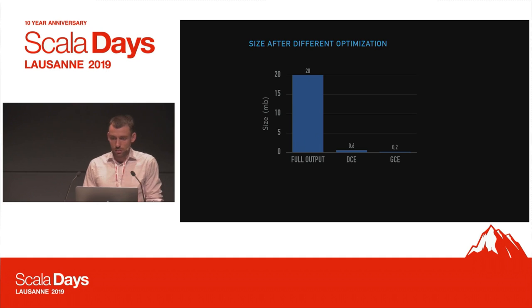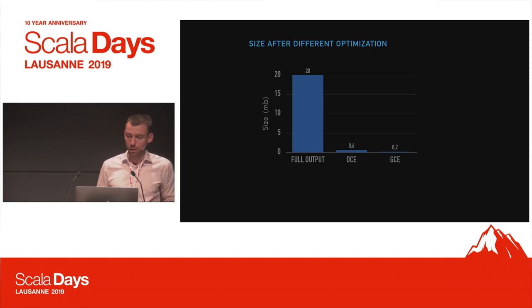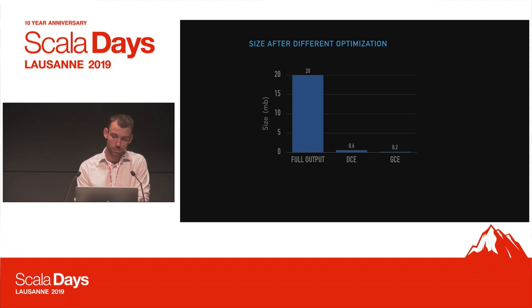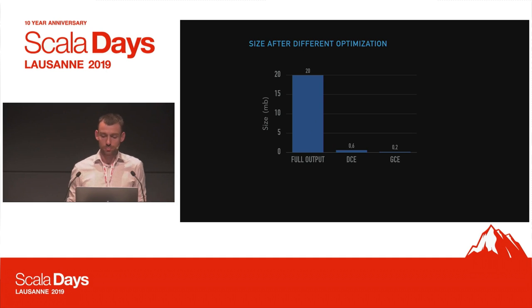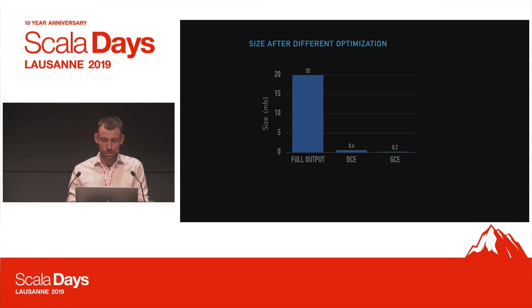Some statistics: for an example program with a full output of around 20 megabytes, after the fast optimization step you're down to around 600 kilobytes. Then if you run the Google Closure Compiler on top of it, you're effectively down to around 200 kilobytes.